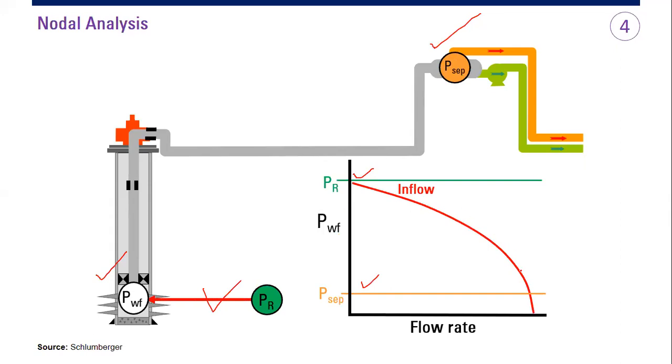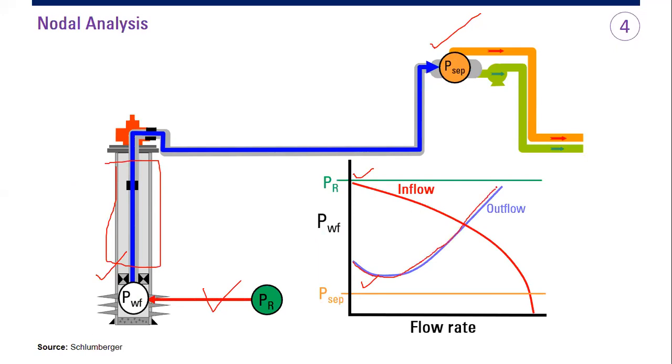You construct the IPR first, and then you flow, you get the flow rate, you get the pressure, and then you study the outflow performance, and then you construct VLP, or outflow performance. The intersection of inflow and outflow is actually our operating point, or operating condition. So it means that our well is now operating at this location within our plot.